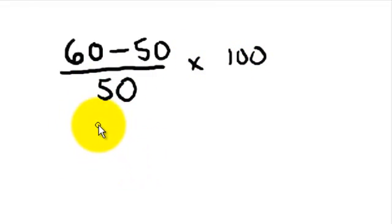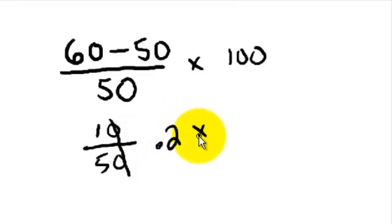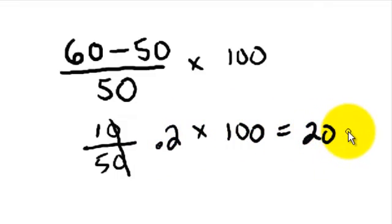So this one's going to be pretty easy. It's going to be 10 over 50, which is basically one-fifth, or 0.2 times 100, equals 20%. That's our percent of increase.